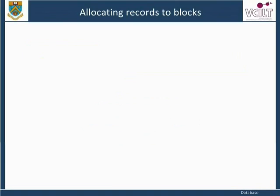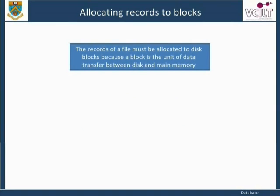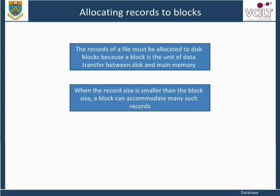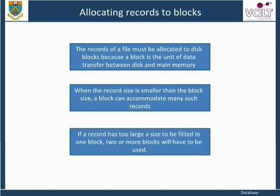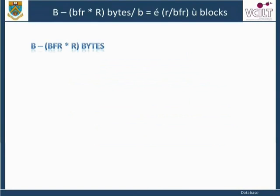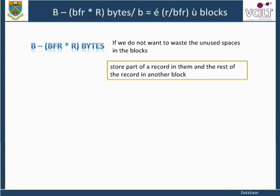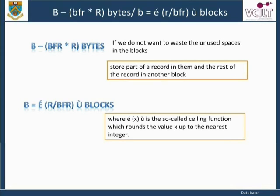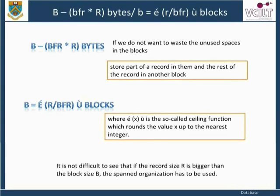The records of a file must be allocated to disk blocks because a block is the unit of data transfer between disk and main memory. When the record size is smaller than the block size, a block can accommodate many such records. If a record is too large to fit in one block, two or more blocks will have to be used. If we do not want to waste the unused spaces in blocks, we may store part of a record in one block and the rest in another. The number of blocks b equals the ceiling of r divided by bfr, where the ceiling function rounds the value up to the nearest integer. If the record size r is bigger than the block size b, the spanned organization must be used.